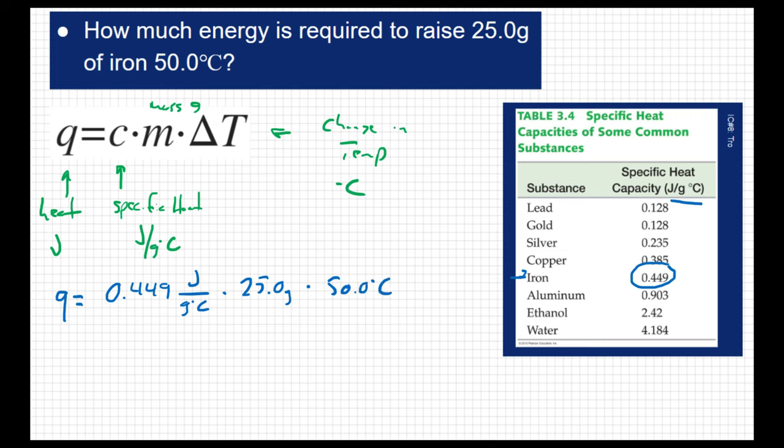And the good thing about putting your units is that you can actually cancel them out. So I've got grams on the bottom here, and I'm multiplying by grams, so those cancel out. And I've got degrees Celsius and degrees Celsius here, so those cancel out. And that's going to leave me in joules. And we're solving for heat energy, which should be in joules. So everything looks good.